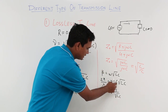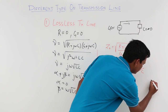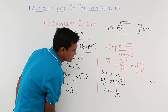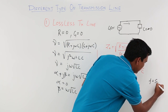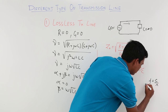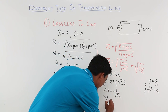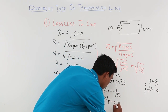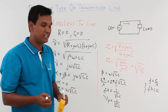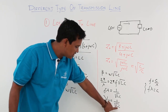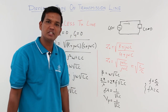We also know that f·λ equals the velocity — this is nothing but the phase velocity, which comes out to be 1/√(LC). So the phase velocity of a lossless transmission line is 1/√(LC).